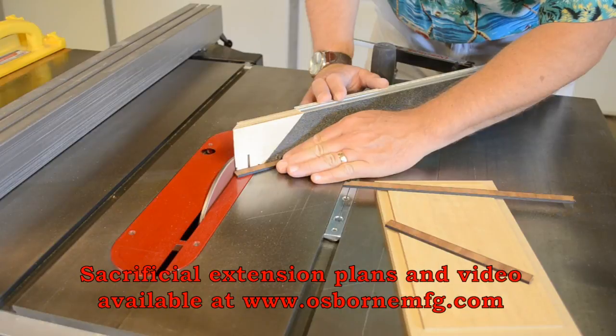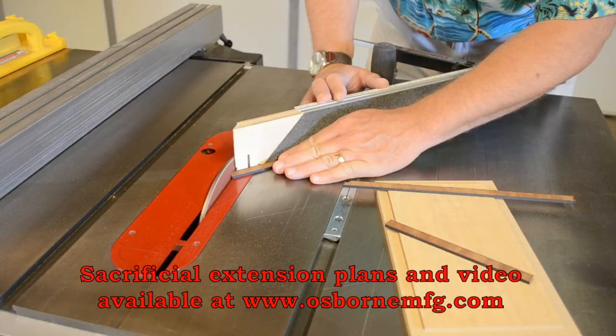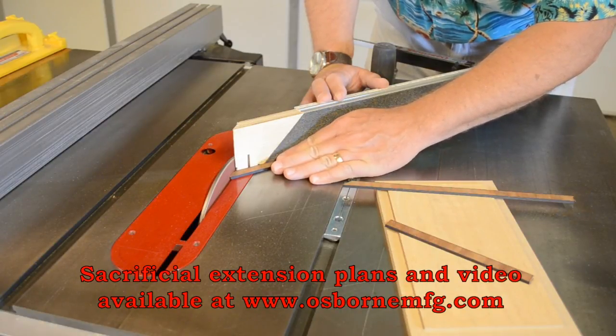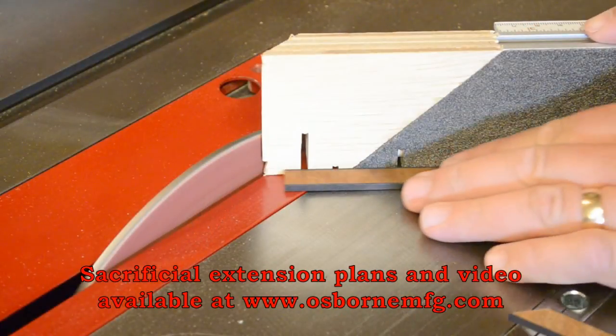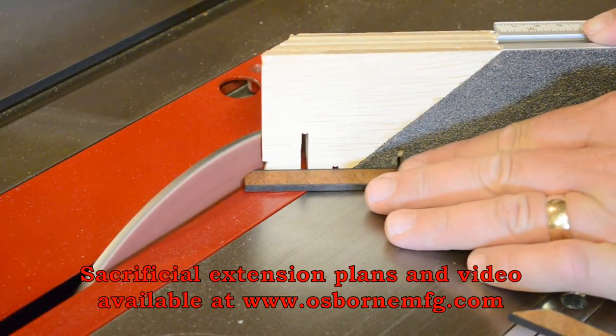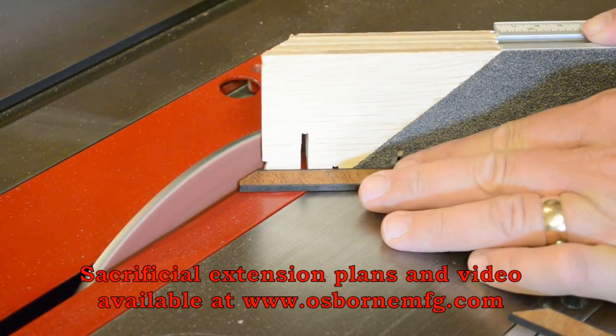The process starts with the parts cross-cut square and slightly oversized. Then the EB-3 is set to 45 degrees and a light grit sanding disc installed in the saw.